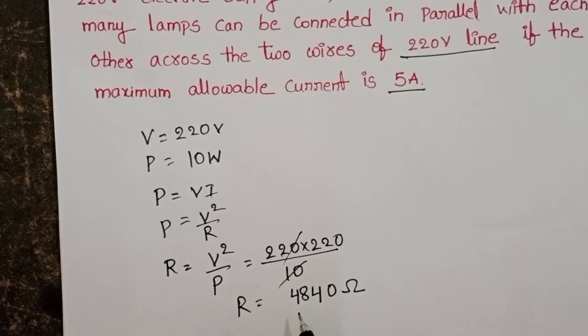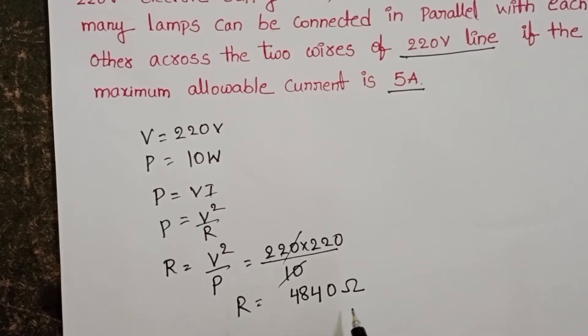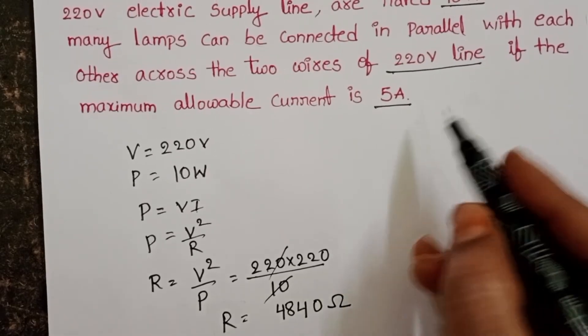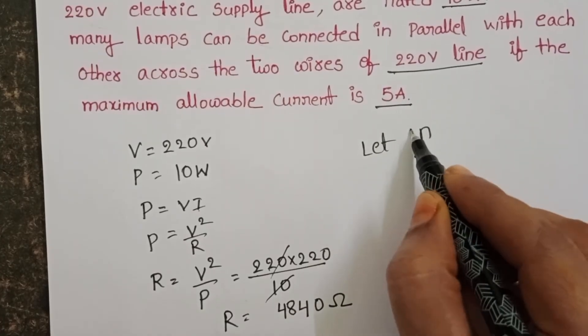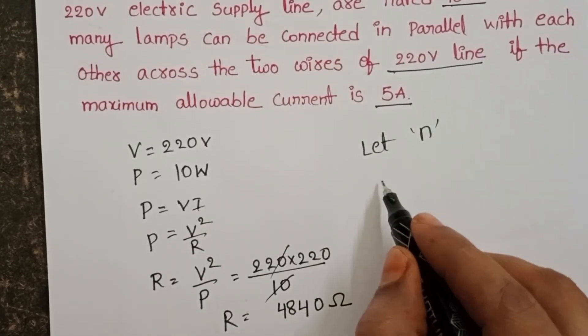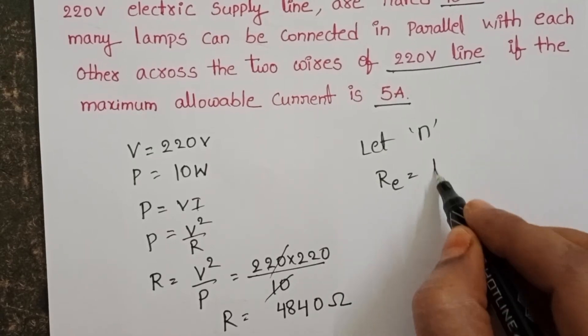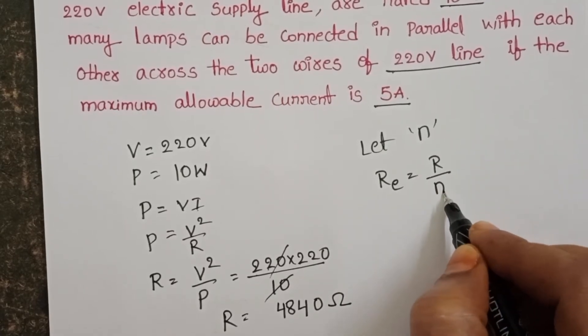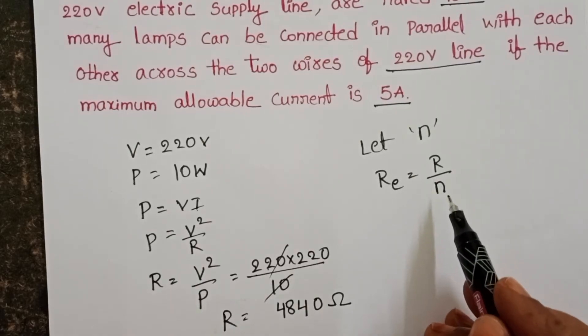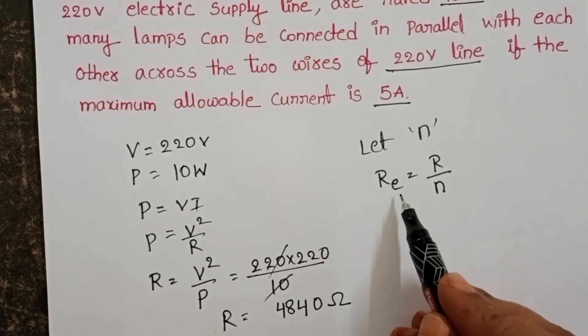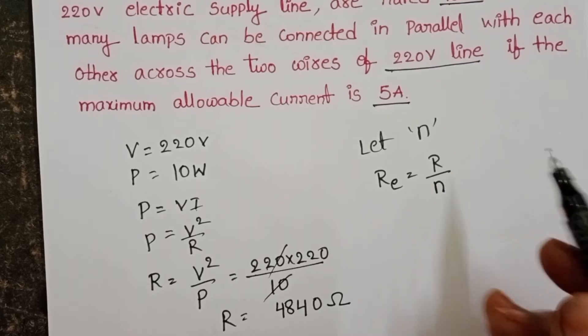Resistance of each bulb is 4840 ohms. Now, number of bulbs—let it be n. All these bulbs are connected in parallel, then equivalent resistance becomes R by n. When resistors of equal resistance are connected in parallel, the formula to calculate equivalent resistance is R by n.